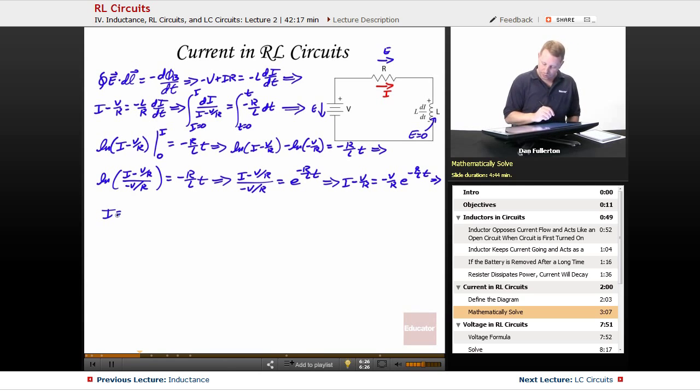I equals V over R and if I factor that out of the right hand side it will be 1 minus E to the minus R over L times T. So there's our current flow as a function of time.